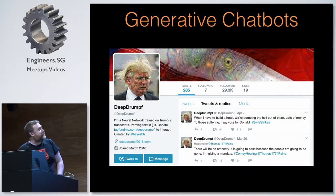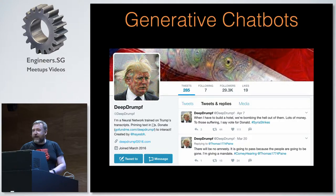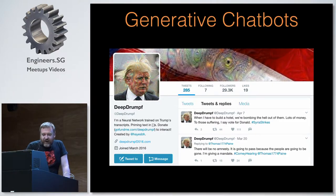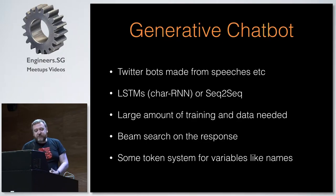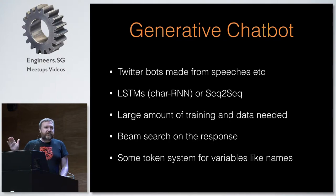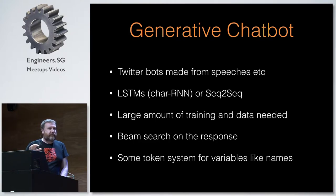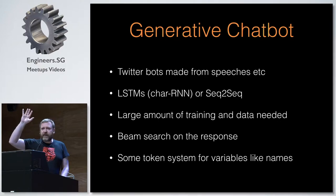The next type of chatbot is generative chatbots. You've probably seen these around — a lot of them are very fun to play with. This one was quite well known last year during the election; it basically tweets as if it was Donald Trump. To build these you need a reasonably large corpus. For someone like Trump, they build it on all his past speeches and past tweets. You can do this with an RNN LSTM approach. There's a well-known code example called Char RNN.